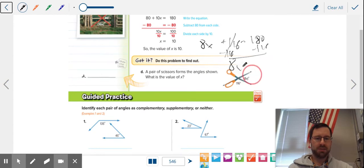Those 116s cancel. 8X equals 64. Undo times 8 with divide 8. X equals 8. Don't forget your degrees symbol.